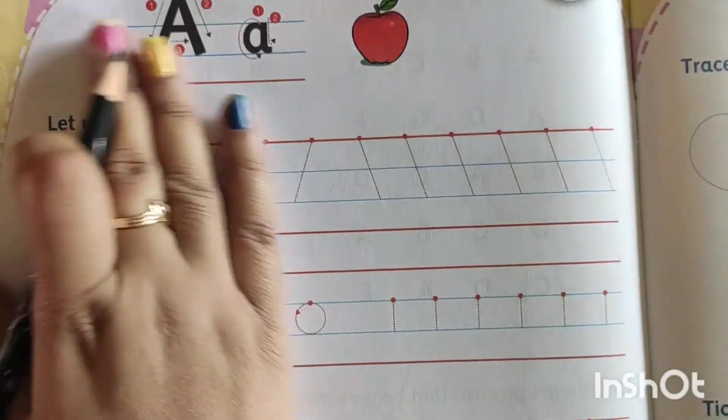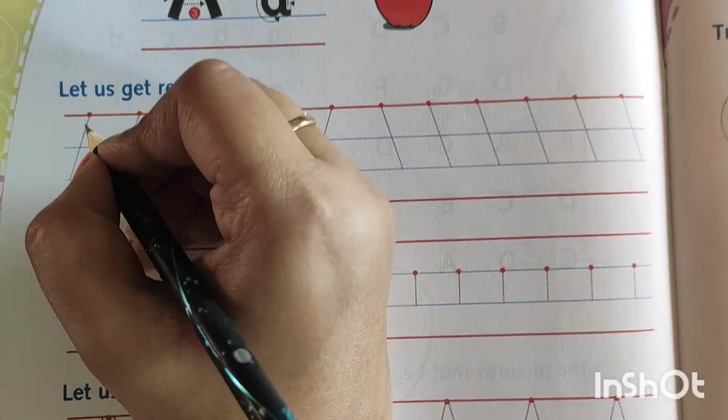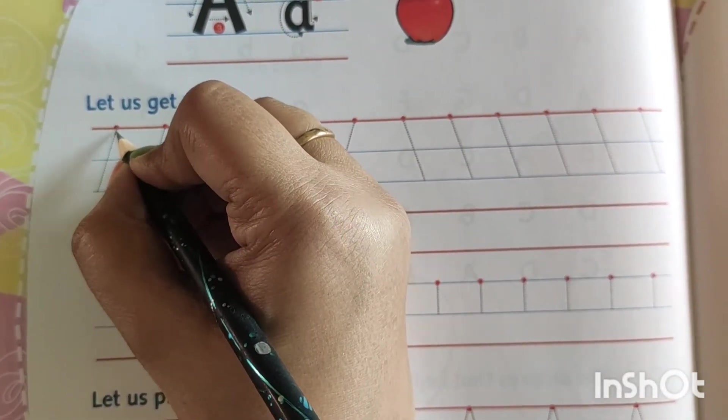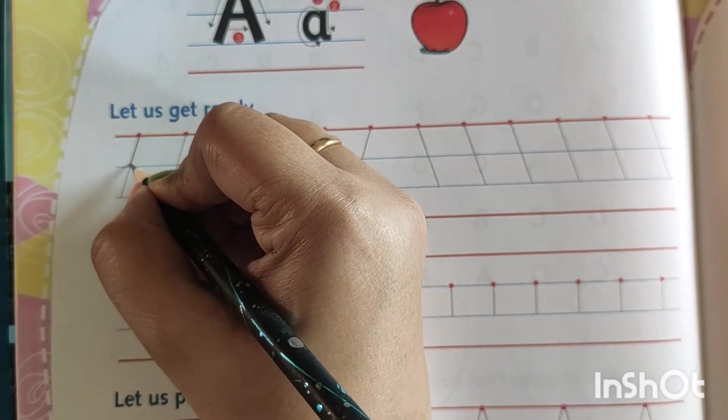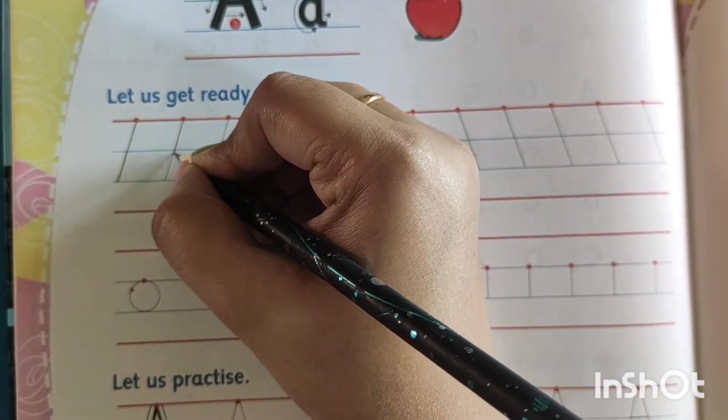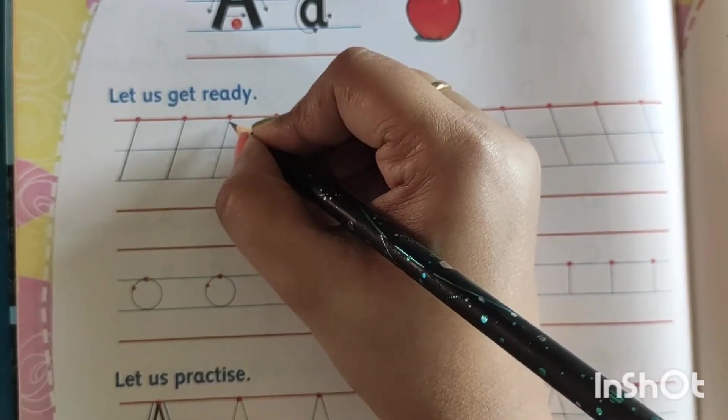So let us start. You can start with me. And start from this point, that red point. The line goes down. At first you have to trace all the lines.